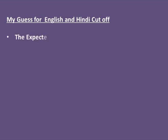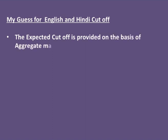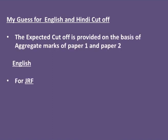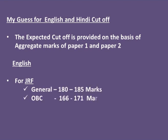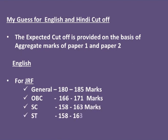Now let us see how much cut-off for English for JRF. For general category, it could be 180 to 185 marks. For OBC, 166 to 171 marks. For SC category, 158 to 163 marks. For ST category, 158 to 163 marks.